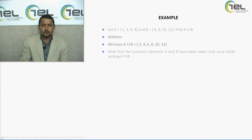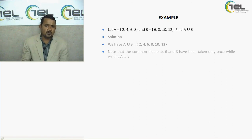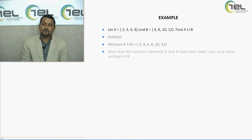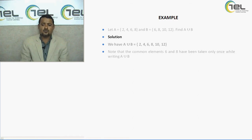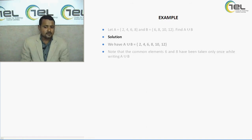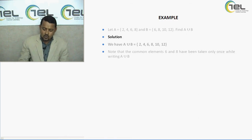For example, let set A be {2, 4, 6, 8} — four elements — and set B be {6, 8, 10, 12}. We find A union B. Elements 2 and 4 are unique to set A; 10 and 12 are unique to set B; but 6 and 8 are present in both A and B. So we include them only once. Therefore A union B is {2, 4, 6, 8, 10, 12}. Common elements are included in the union only once.